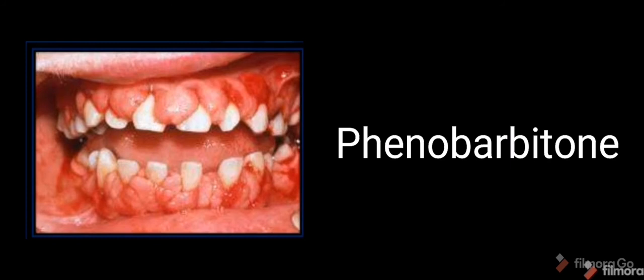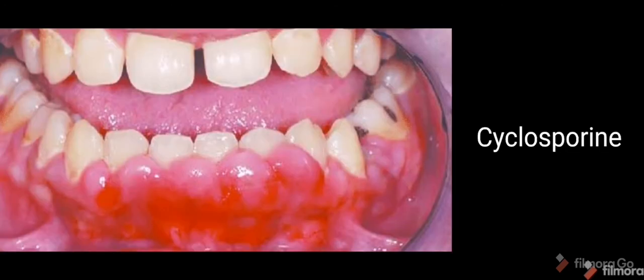Differentiating between drug-specific overgrowths: phenobarbitone-induced gingival enlargement does not show lobulation of the interdental papilla, and severity is higher in the posterior region compared to the anterior. Cyclosporine-induced gingival enlargement, being immunosuppressive in nature, presents with lobulation, a pebbly and papillary surface, and superimposed candidal infection due to the immunosuppressed state.